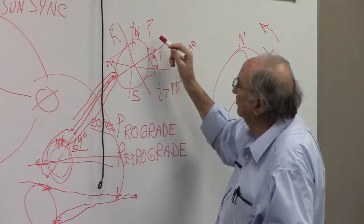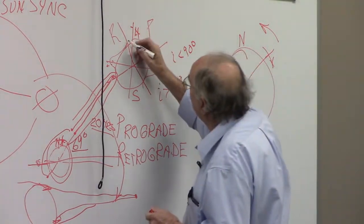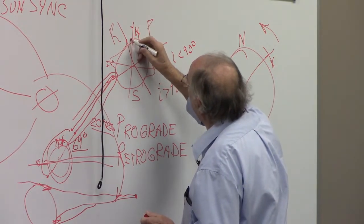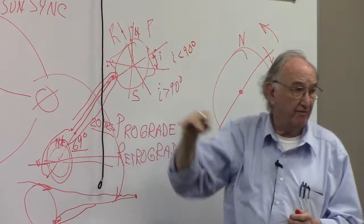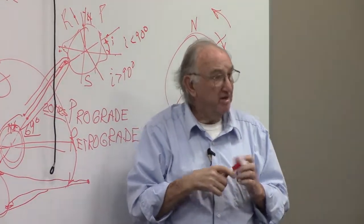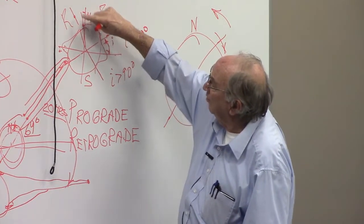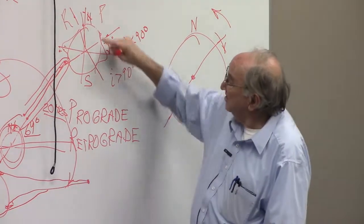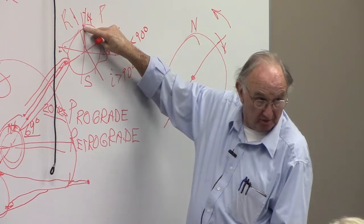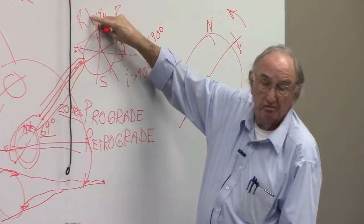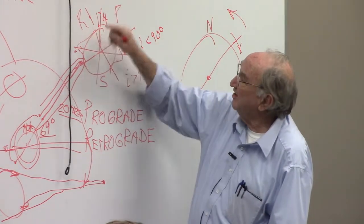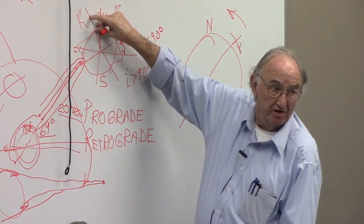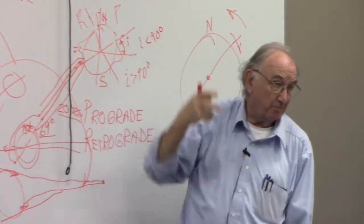The higher the altitude, the more the inclination. Why would that be? If I have a satellite at low altitude, I may only need a small inclination. But at higher altitude, I may need more inclination. Is there more gravitational force closer or farther? The closer. So lower altitude has more force to rotate the orbit. If I increase altitude, I have to increase inclination to overcome the reduced gravitational force. That gravitational force due to the oblateness is what causes the plane to rotate.